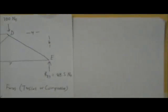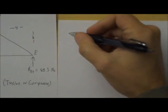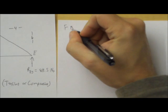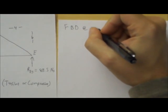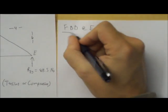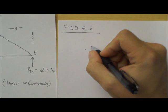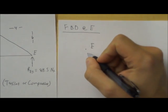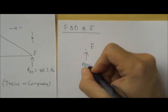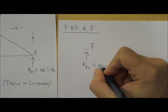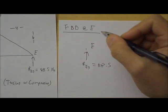Now we're going to start our free body diagram at E. If we take a look at our diagram, I'm going to go ahead and label my work. FBD at E, and I draw point E, and I draw the reaction force REY equals 88.5.